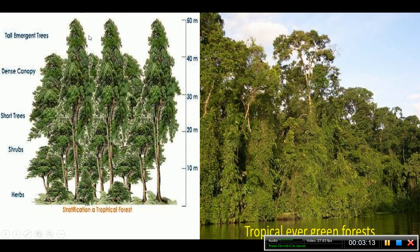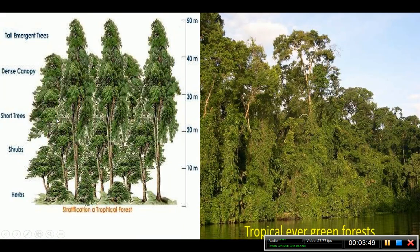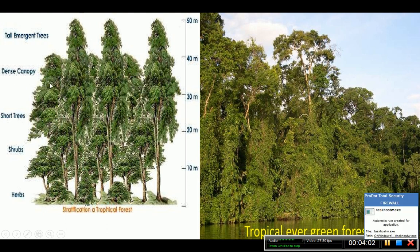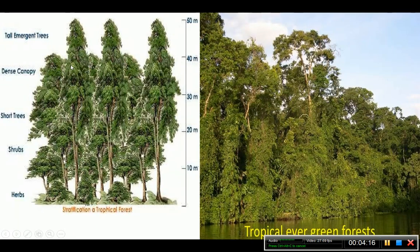The tropical evergreen forest has a multi-layered structure. Near the ground are plants with very small growth. Then there are shrubs up to around 10 to 15 meters height. Trees up to 20 meters or more are categorized as mid-story trees. Above 30 meters there is a dense canopy region where branches and leaves create layers, and sunlight is not able to reach the ground.